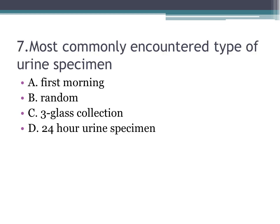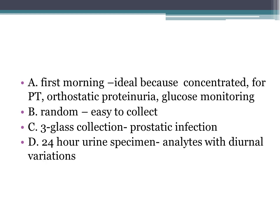Number seven: most commonly encountered type of urine specimen — A. first morning, B. random, C. three-glass, D. 24-hour. The correct answer is B, random — it is easy to collect. First morning is ideal and most concentrated, used for pregnancy test, orthostatic proteinuria, and glucose monitoring. Three-glass collection is for prostatic infection. 24-hour urine is for analytes with diurnal variations.